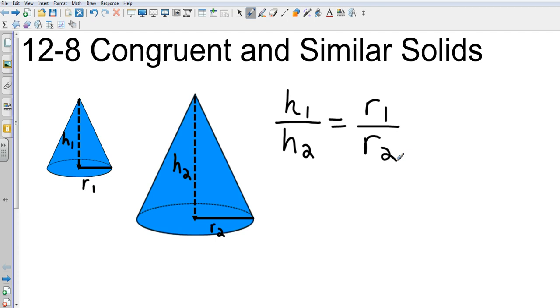Let's take a look at the example. Let's say that h₁ is 15 with a radius of 6, and let's say that h₂ is 16 with a radius of 6.